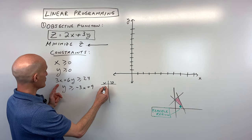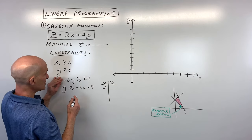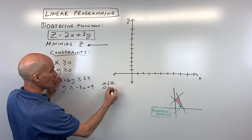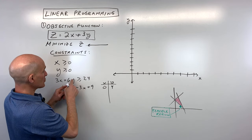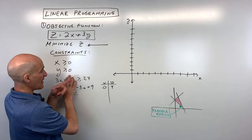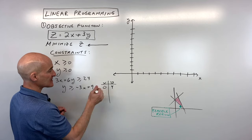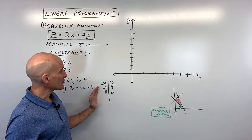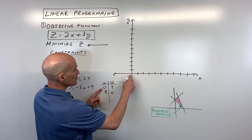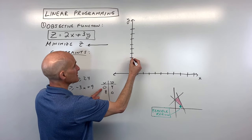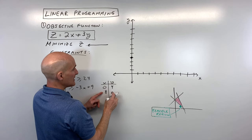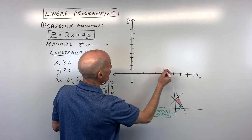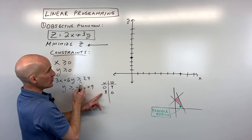For 3x + 6y ≥ 24, I'll use the intercept method — make a table and find the x and y intercepts. If x is zero, 3 times zero is zero, so divide both sides by 6 — y equals 4. If y is zero, divide by 3 — x equals 8. So we have the points (0, 4) and (8, 0). I'm going to draw a solid line because it's equal to.